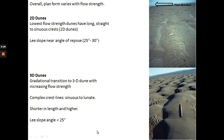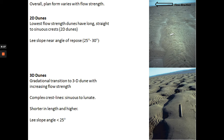Then you have three-dimensional dunes, or 3D dunes. The crest line is no longer simple and straight but is complex — it can be sinuous to lunate. 3D dunes also tend to be shorter in length and higher, with a much gentler lee slope of less than 25 degrees. The plan form of the dune varies with flow strength: at lower flow strength you get straight 2D dunes, which change into 3D crested dunes with increasing flow strength.